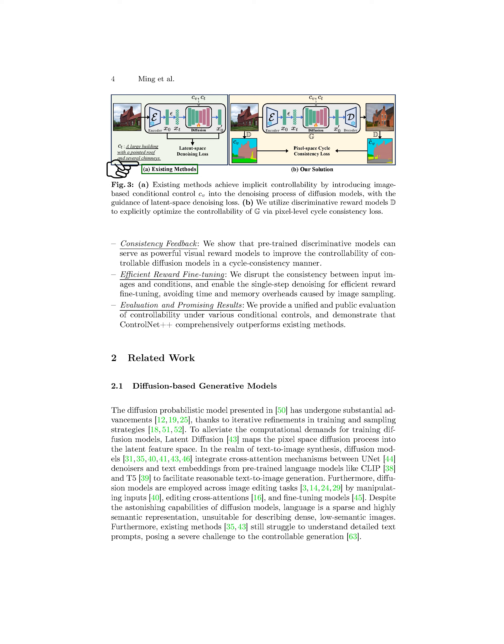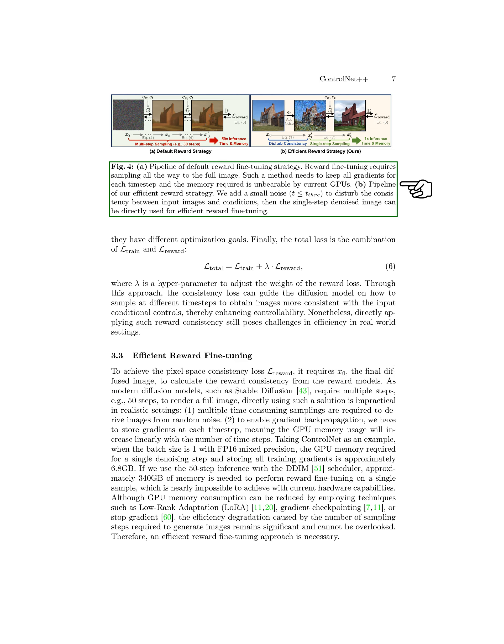In controllable generation, with given image and text conditions, the training loss at each step is redefined. During inference, the final denoised image can be predicted from random noise using a step-by-step denoising process. Controllability is modeled as consistency between input conditions and generated images, quantified through reward models. By minimizing the consistency loss, we optimize for more controllable generation across various conditional controls. The total loss combines training and reward losses to guide the model in sampling at different time steps for more consistent images with input conditional controls, ultimately enhancing controllability.